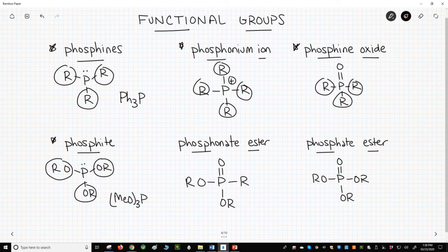Going back to an expanded octet, phosphorus with a P double bond O, one R group, and two alkoxy or OR groups is called a phosphonate ester.